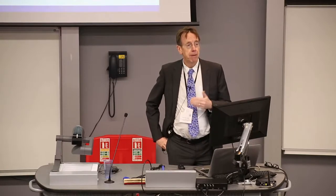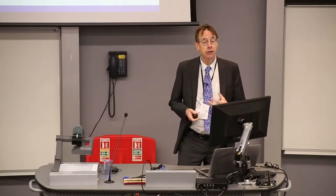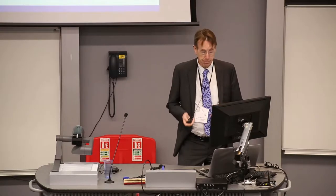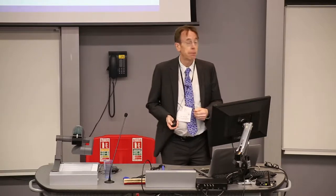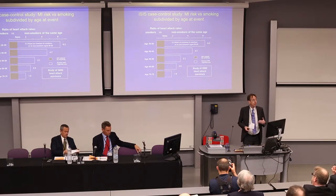In retrospective studies you take people with a particular disease and compare them with controls. One big advantage is that you can accrue large numbers and accrue large numbers with particular characteristics — those who are much younger, for example — and that can be quite important in understanding how strong the associations of a risk factor are with disease and what the impact is at a population level.